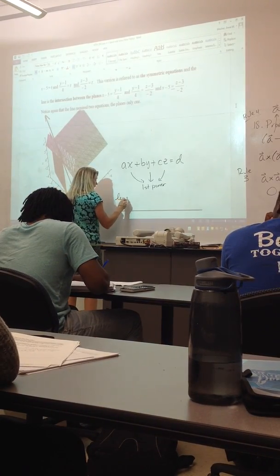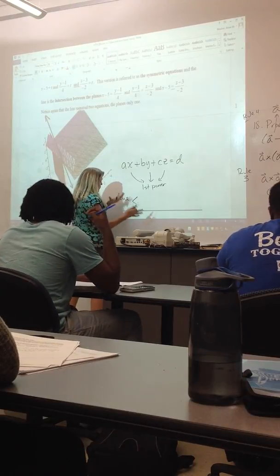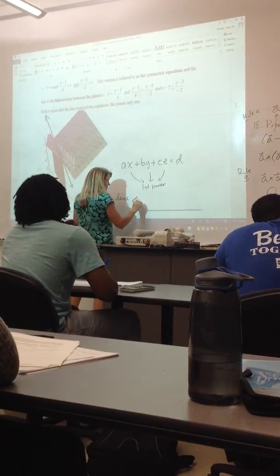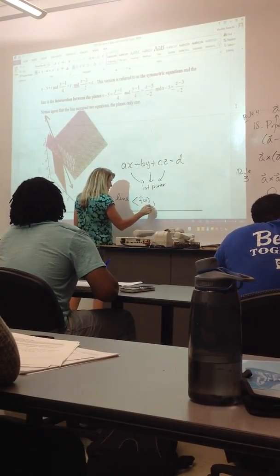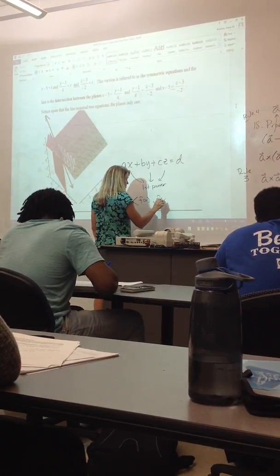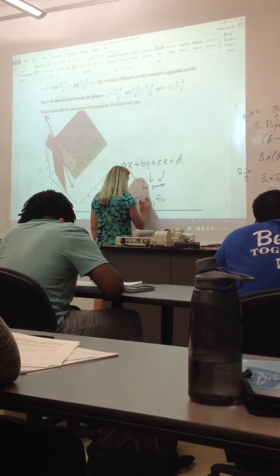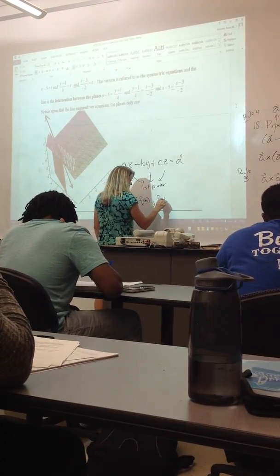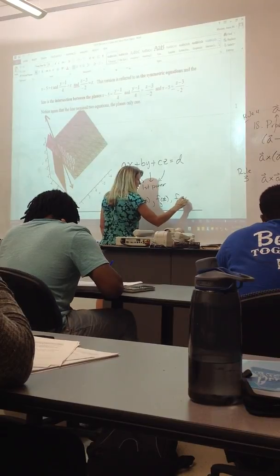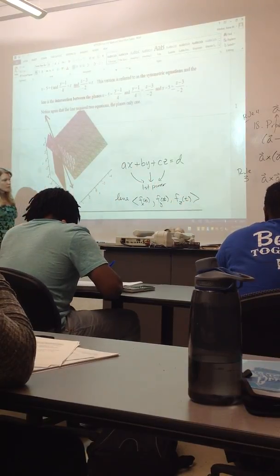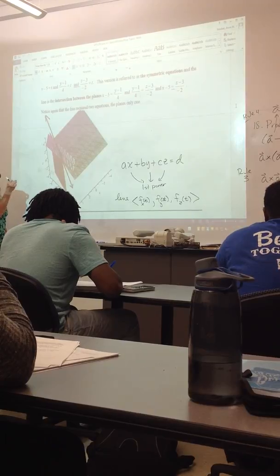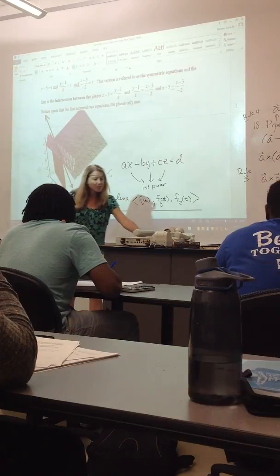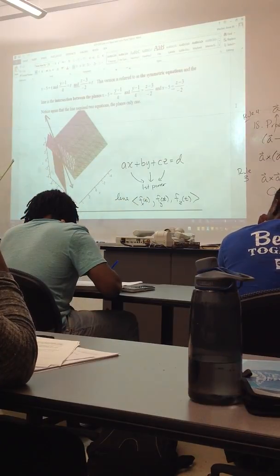So the equation of a line is - there's two different ways that you could represent it, but one way is you'll have some function that's explaining how to get x, and some function that's explaining how to get y, and some function that's explaining how to get z. Now if it's a line, those functions will be linear themselves, they'll be little linear equations.